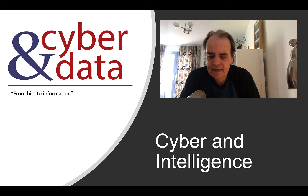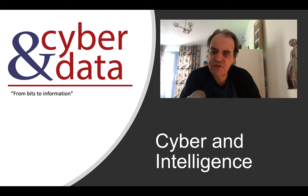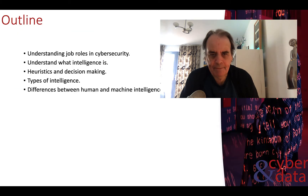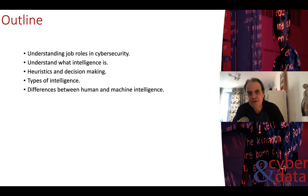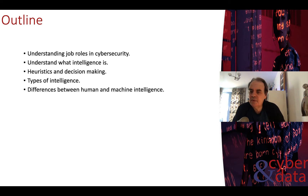Let's have a look at cyber security and a little bit of human and machine intelligence. Initially we'll look at what job roles there are in cyber security, then we'll move on to understand what intelligence is, how we can use heuristics and decision-making, different types of intelligence, and the differences between human intelligence and machine intelligence. Later on we'll be looking in more detail at machine learning.